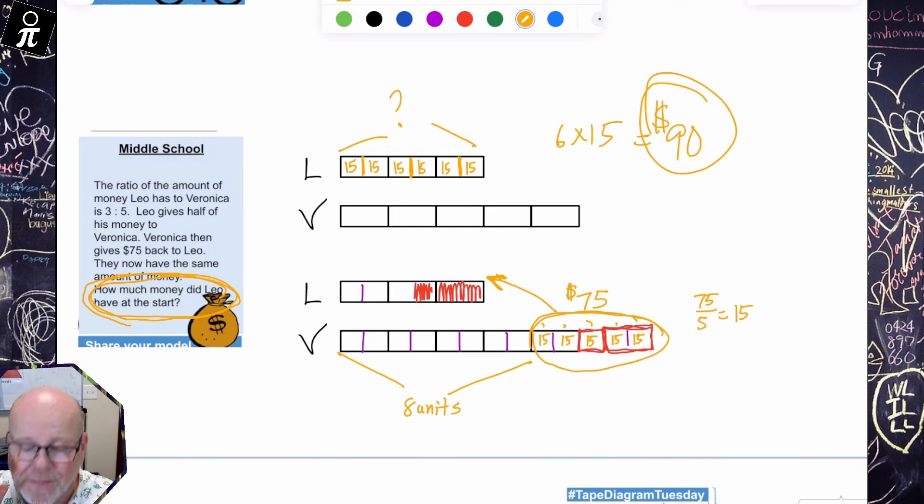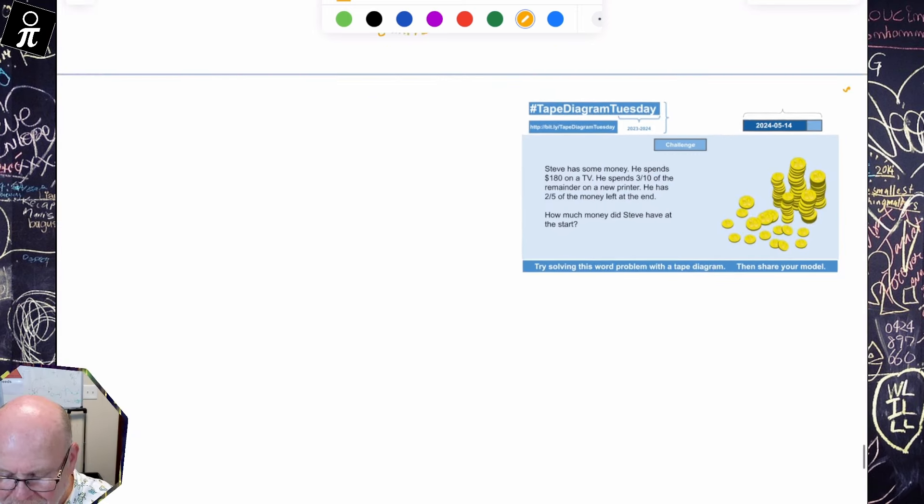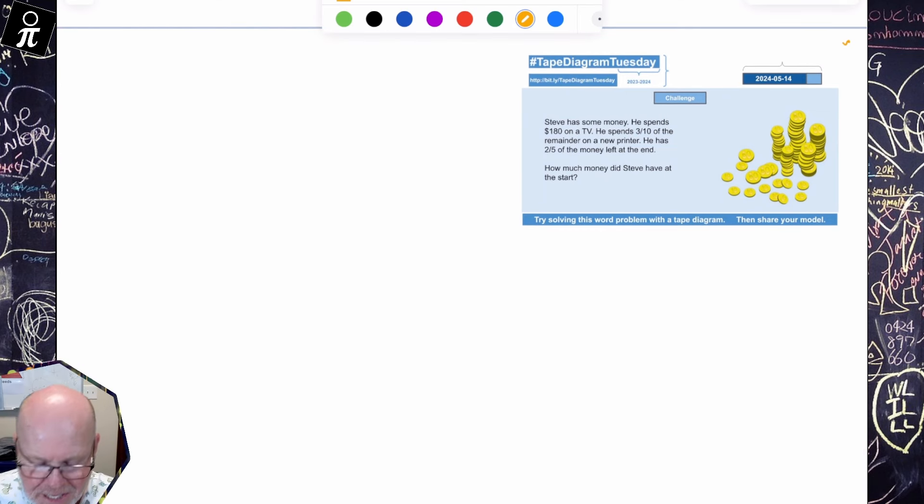Well, now that we know each of these tiny little units is 15, we can go back up to Leo and cut each of those in half. And we know that each of those little half units is 15. So now we know the answer to the question, how much did Leo have is whatever six times 15 is, which is $90. So Leo had $90 at the beginning. That's a beautiful one. That's a really good problem. Here's the challenge folks.